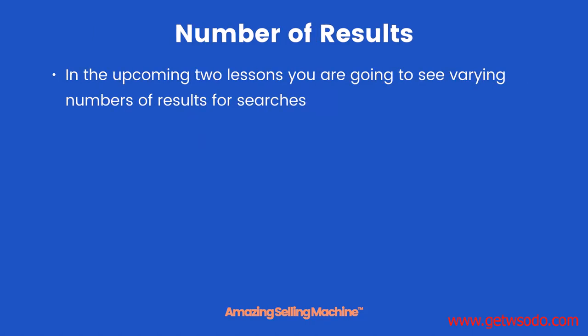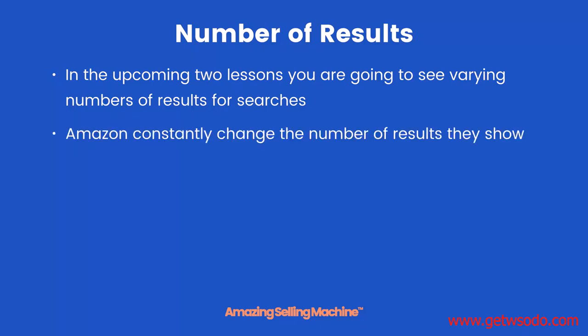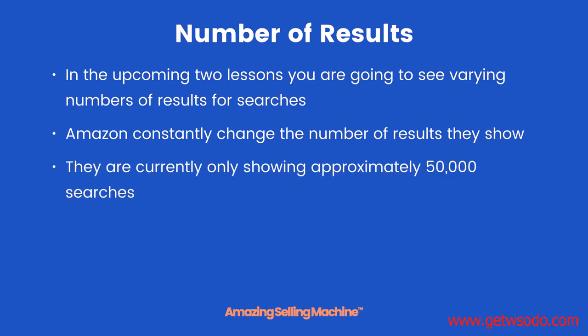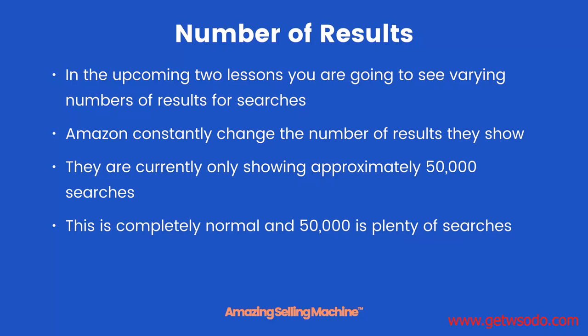In the upcoming two lessons you're going to see varying numbers of results for the searches we perform, because Amazon constantly changes the number of results they show. As of yesterday they're currently only showing approximately 50,000 searches instead of the normal million-plus — but that is absolutely nothing to be worried about. It's just Amazon split-testing the number of results they show. This is completely normal, and 50,000 is plenty. I've been doing this for four years and I've never gone through 50,000 searches for any particular category, because Amazon shows these roughly in order of ranking — anything below 50,000 is not going to be of interest to us.